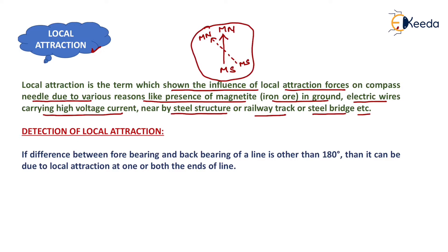Now if there will be local attractive forces then it will deviate the needle of the compass and it will not show the exact location of magnetic north and magnetic south. It will be deviated slightly from the actual magnetic north.